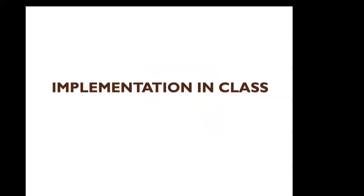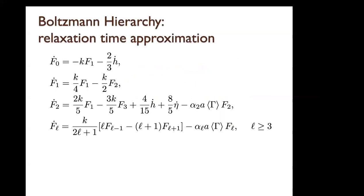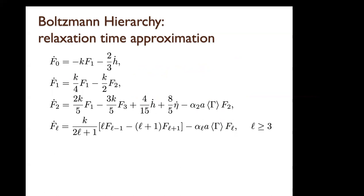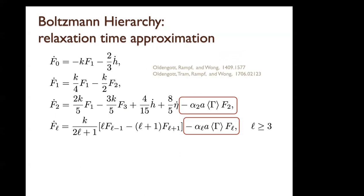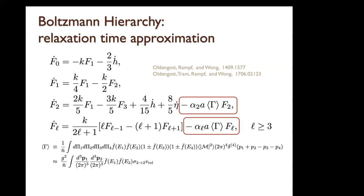Let me briefly discuss how to implement self-interacting radiation in CLASS. We use the usual Boltzmann hierarchy and add interaction terms in the form of a relaxation time approximation — proportional to γ — for the second and higher moments. Previous literature often considered γ from dimensional analysis with a relaxation time coefficient of one. There have been first studies to calculate this coefficient correctly, and we developed this further by defining the average γ precisely and finding a universal relaxation time coefficient.